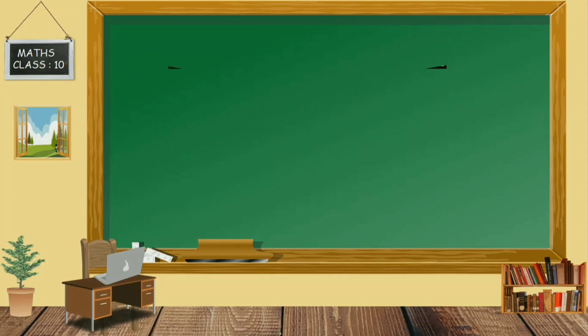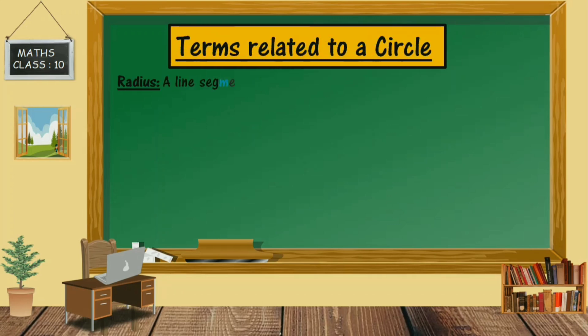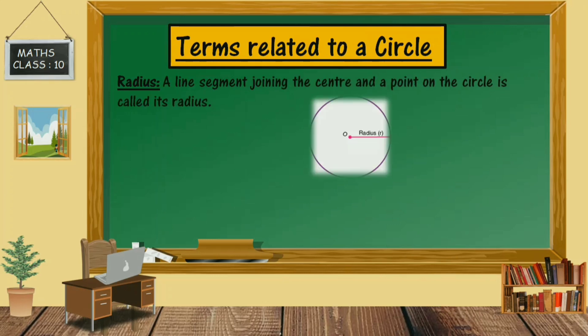Now we will discuss some terms related to a circle. First of all, radius: a line segment joining the center and any point on the circle is called the radius.